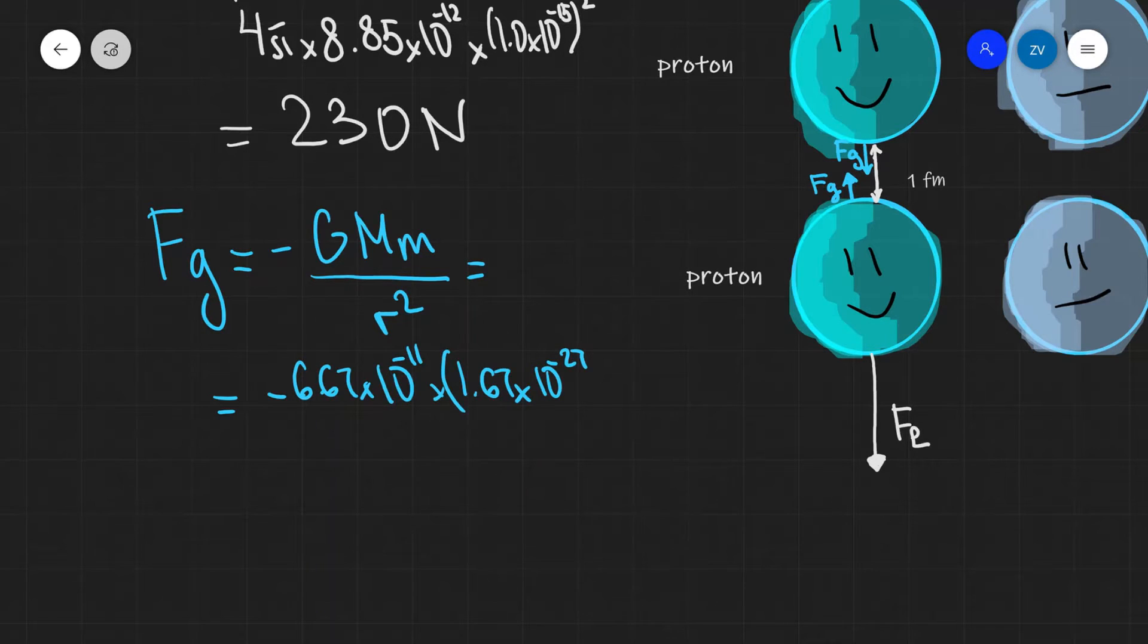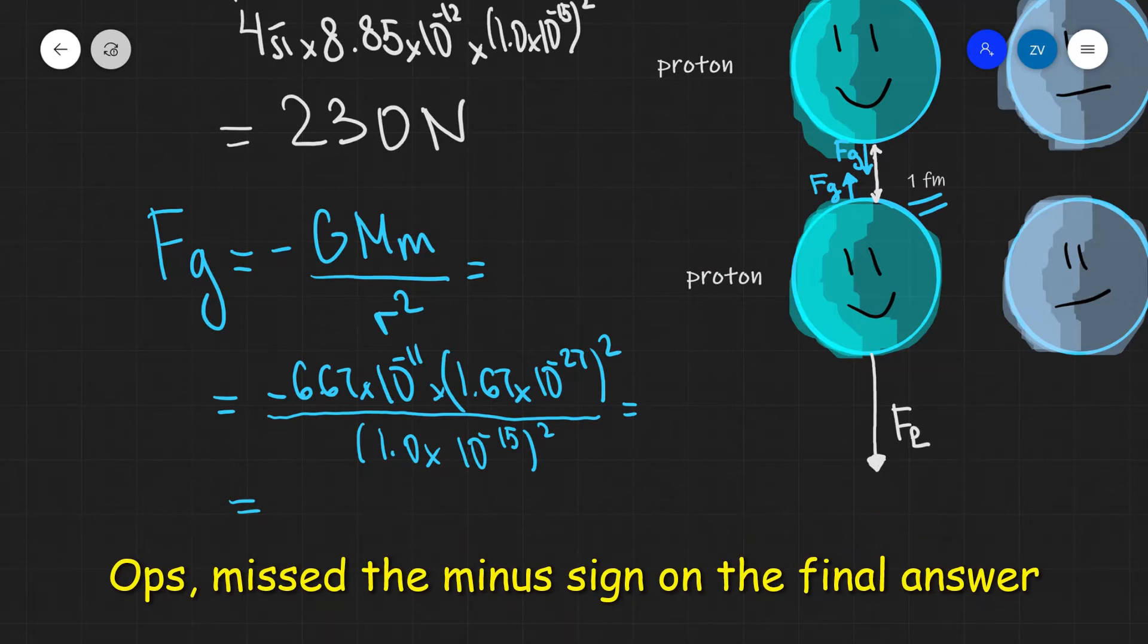I'm going to square this because in this case, we're dealing with two protons, so M and M are going to be the same. I'm going to divide this by the distance, which is R squared, that's one femtometer. That's going to be 1.0 times 10 to the power of minus 15, and then all of this is squared. Putting this into a scientific calculator, we're going to get a pretty strange result. So, 1.86 multiplied by 10 to the power of minus 34 Newtons.